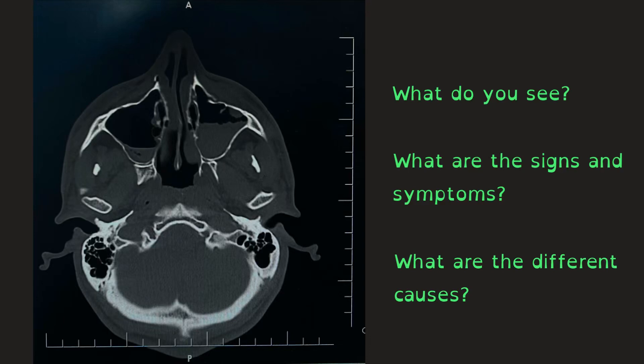Hello everyone, today I'm going to discuss a very important CT scan. This is the kind of CT scan that you usually see in the emergency department after a trauma case. It is very important to recognize the features in this because it is very dangerous for the person if you delay the treatment, let alone the identification of this very important finding on the CT scan. We are going to discuss this and the signs and symptoms the patient is going to present with in trauma, and what are the different causes.